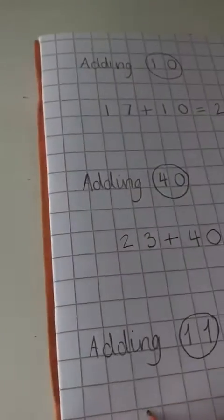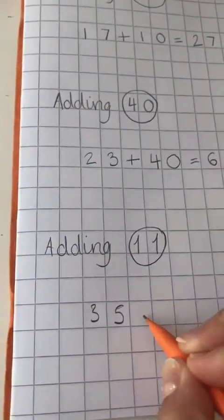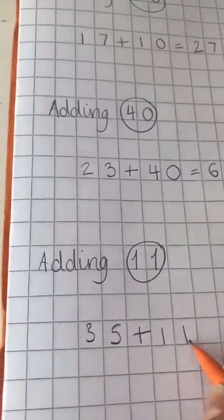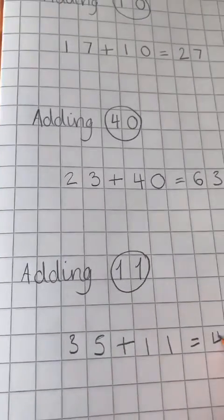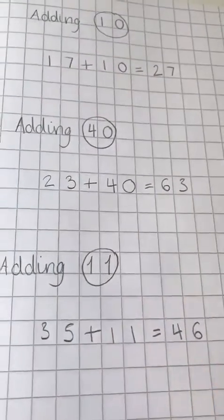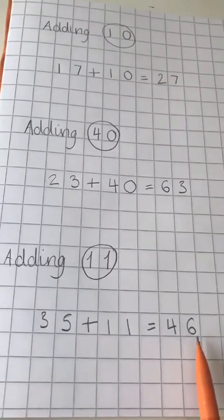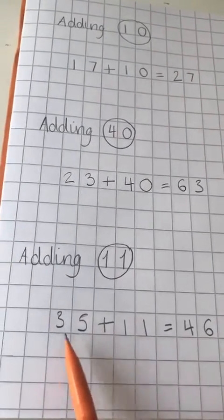So my sum would be 35 plus 11 equals 46. Now this time my unit and my 10 has changed.